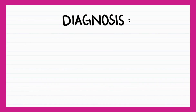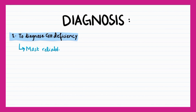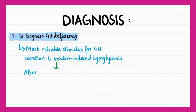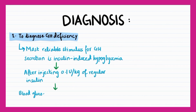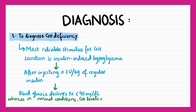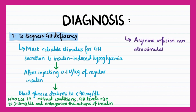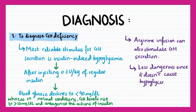The first step in diagnosing pituitary insufficiency is to measure individual hormone levels. To diagnose growth hormone deficiency, the most reliable stimulus is insulin-induced hypoglycemia. After injecting 0.1 units per kilogram of regular insulin, blood glucose declines to less than 40 milligrams per deciliter if growth hormone is deficient. In normal conditions, growth hormone levels rise to greater than 10 milligrams per deciliter and antagonize the actions of insulin. Arginine infusions can also stimulate growth hormone secretion and are less dangerous since they don't cause hypoglycemia.